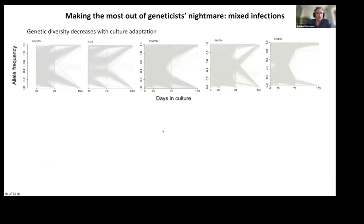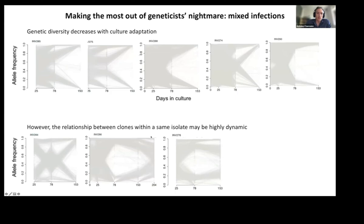Now let's address the broader picture. As I mentioned with the FWS values, most isolates are polyclonal infections, but the genetic diversity in the flask decreases during culture adaptation. In five examples, a single genome reaches fixation towards the end of culture adaptation. However, there are many exceptions — like three isolates for which there is evidence of competition between genotypes. It's highly dynamic, and no genome reaches fixation. We don't fully understand why yet, but this is definitely a new area for further investigation.